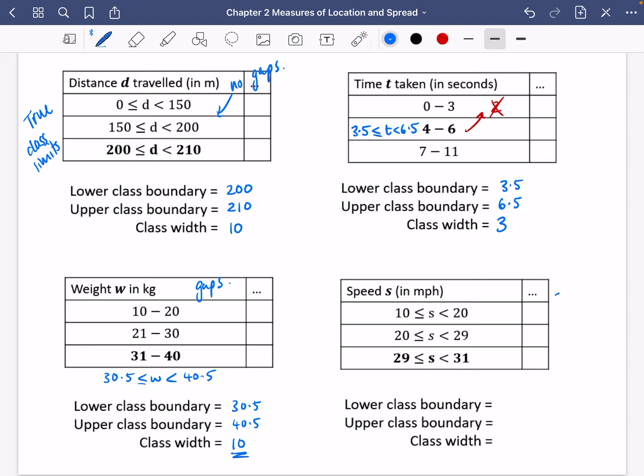This last one, it's already in its true class limits form. So we don't need to do any adjustments. So that lower class boundary is 29. There's no gaps there. The upper class is 31. And the difference between them is just 2.